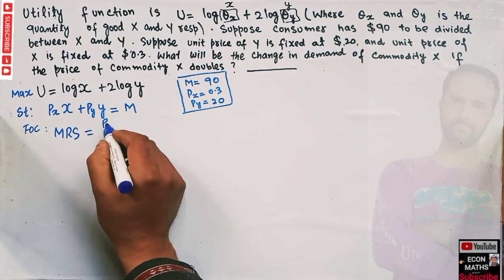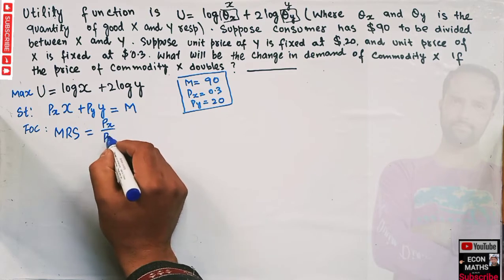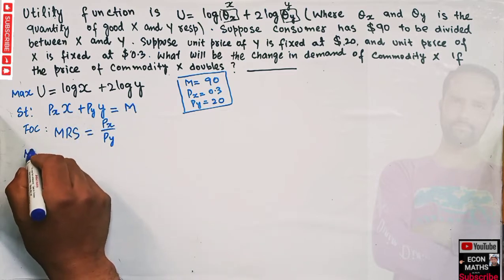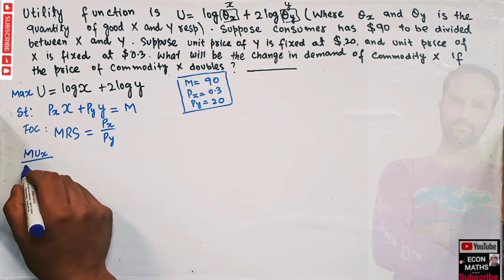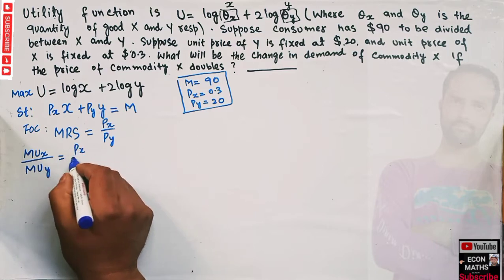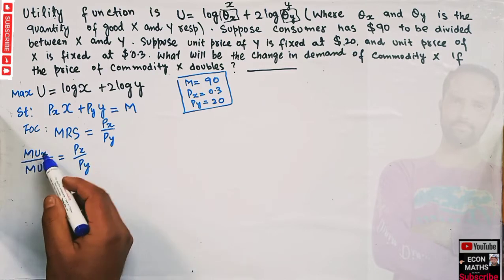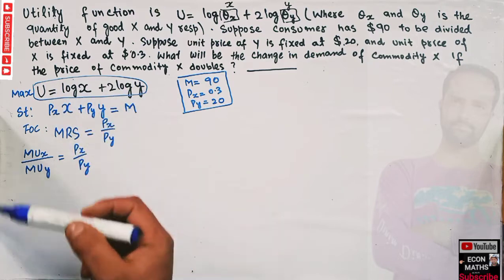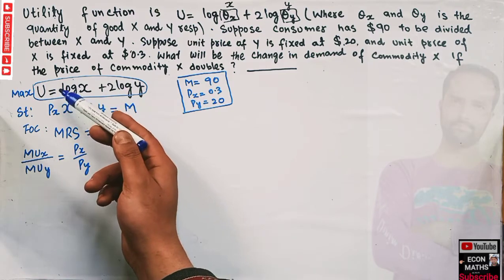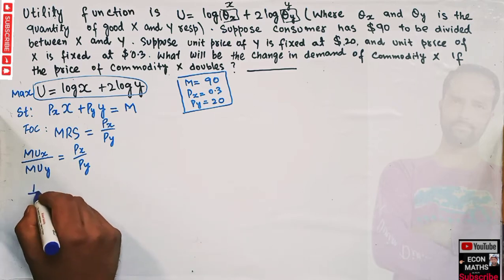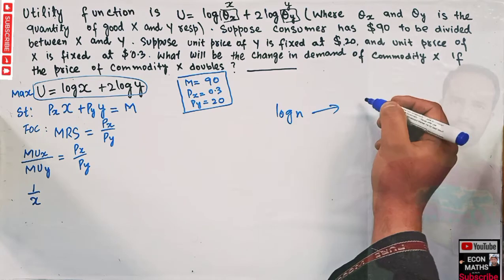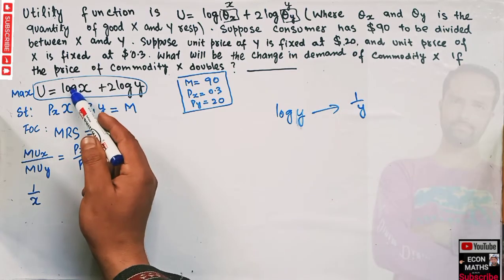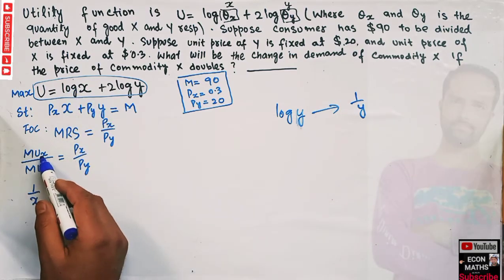The MRS between two goods should equal their price ratio Px/Py. MRS is defined as the marginal utility of X divided by the marginal utility of Y, equal to Px/Py. The marginal utility of X is the partial derivative of the utility function with respect to X. The derivative of log(X) with respect to X is 1/X, so the marginal utility of X is 1/X.